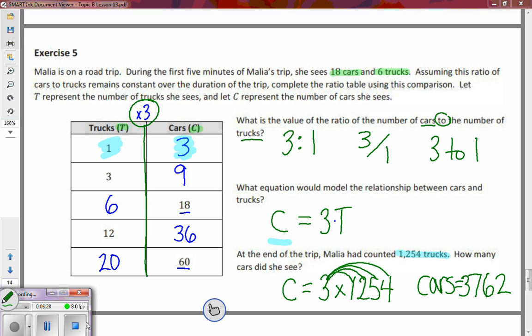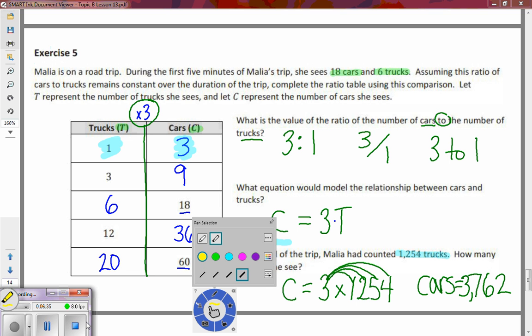So our final answer of cars is three thousand seven hundred sixty two, and that is our final answer.